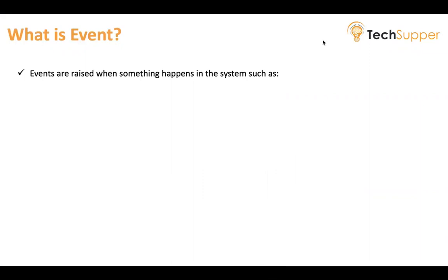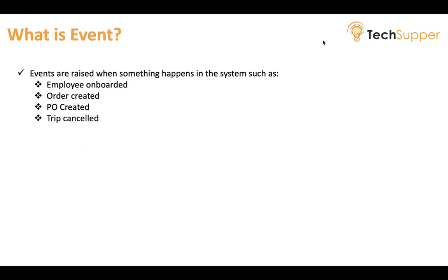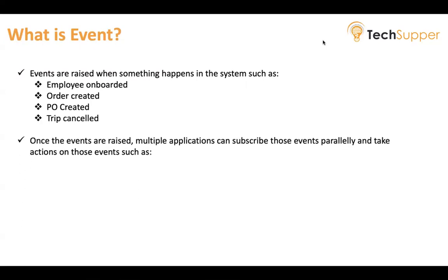So basically, what is an event? Events are raised when something happens in the system. The system can be your HR application, ERP application, finance application, supply chain application, or sales application. Any application can raise different events — such as 'employee onboarded' when an employee is onboarded, 'order created' when an order is created, 'PO created' when a PO is created, or 'trip canceled' when a trip is canceled.